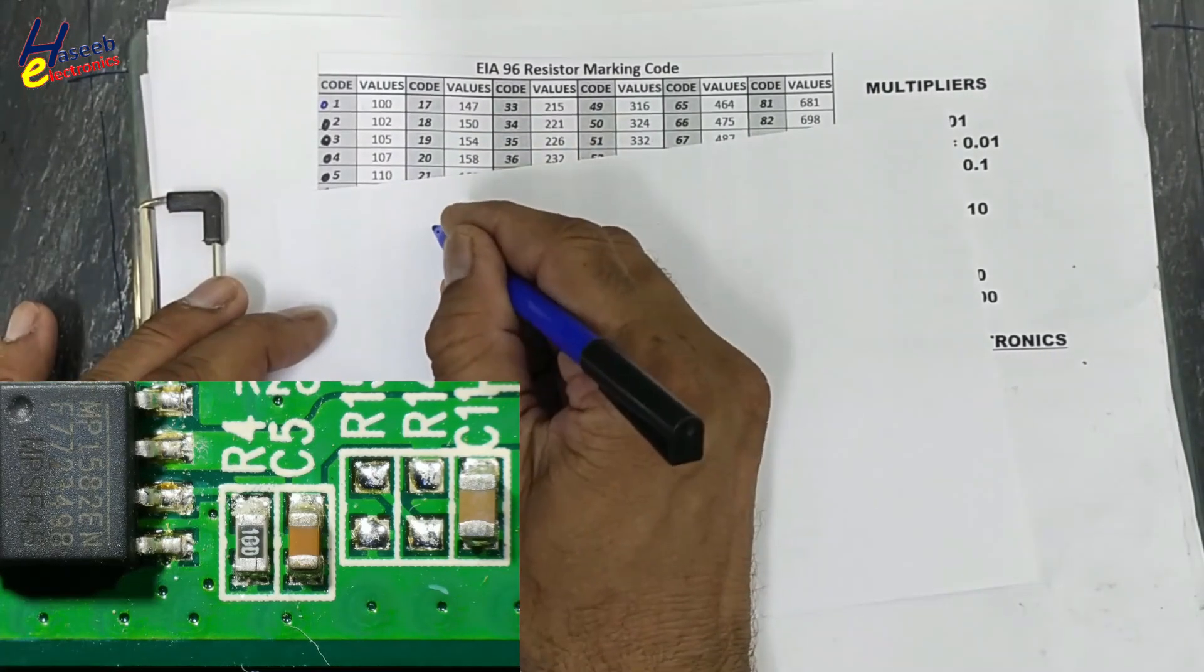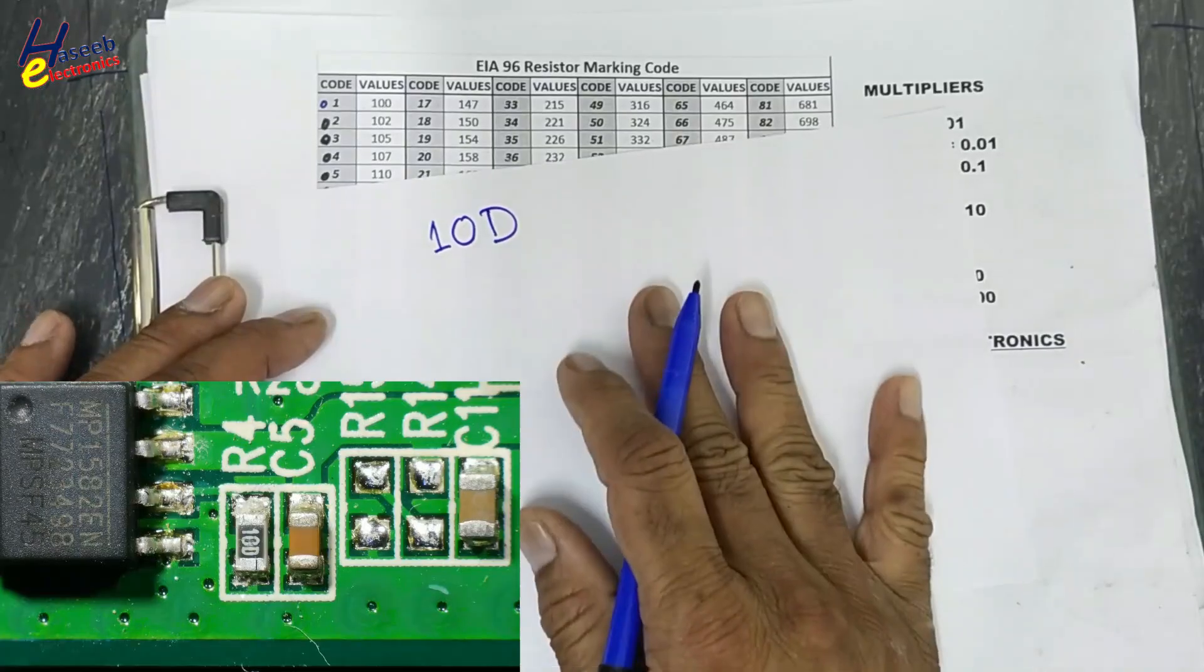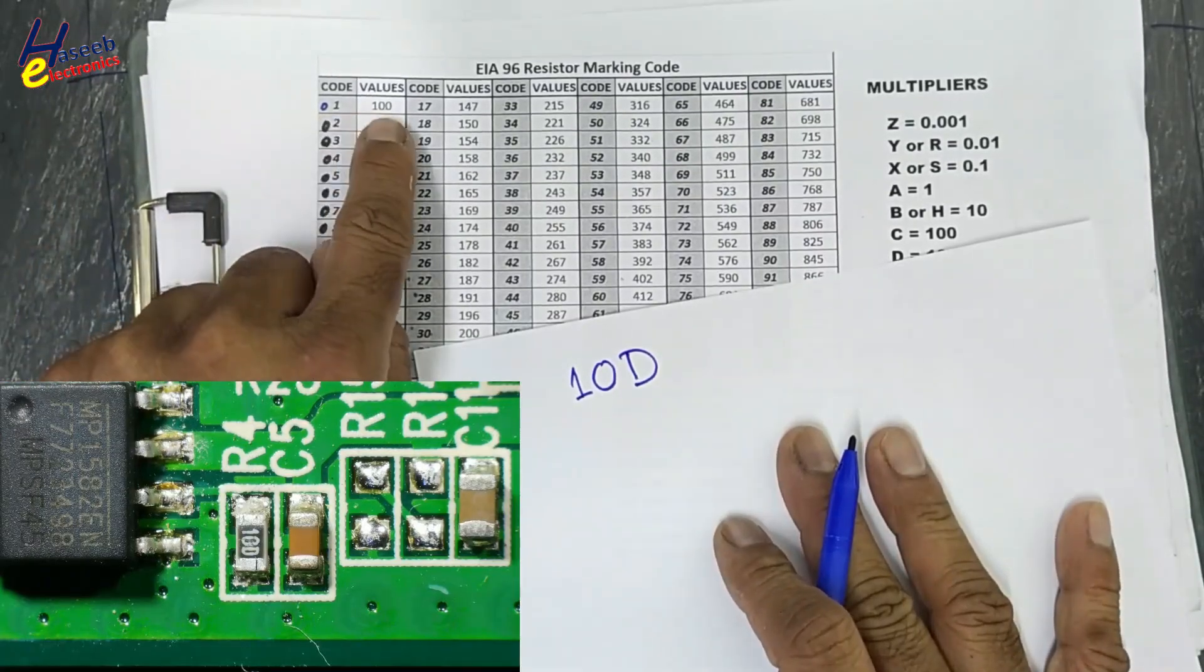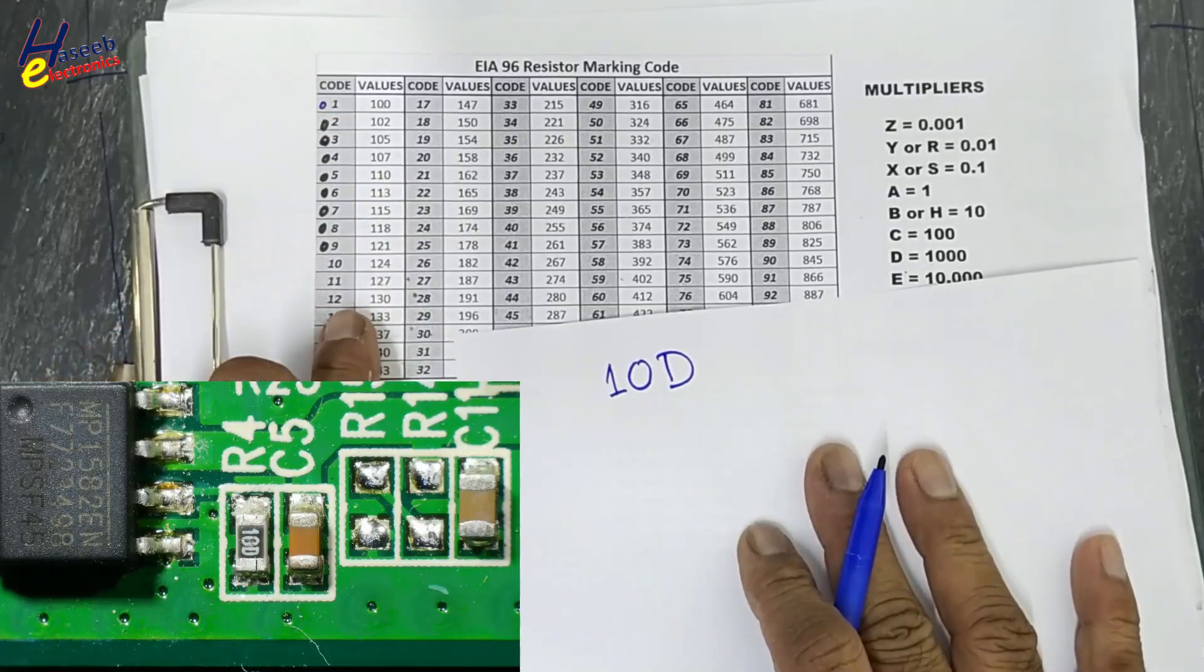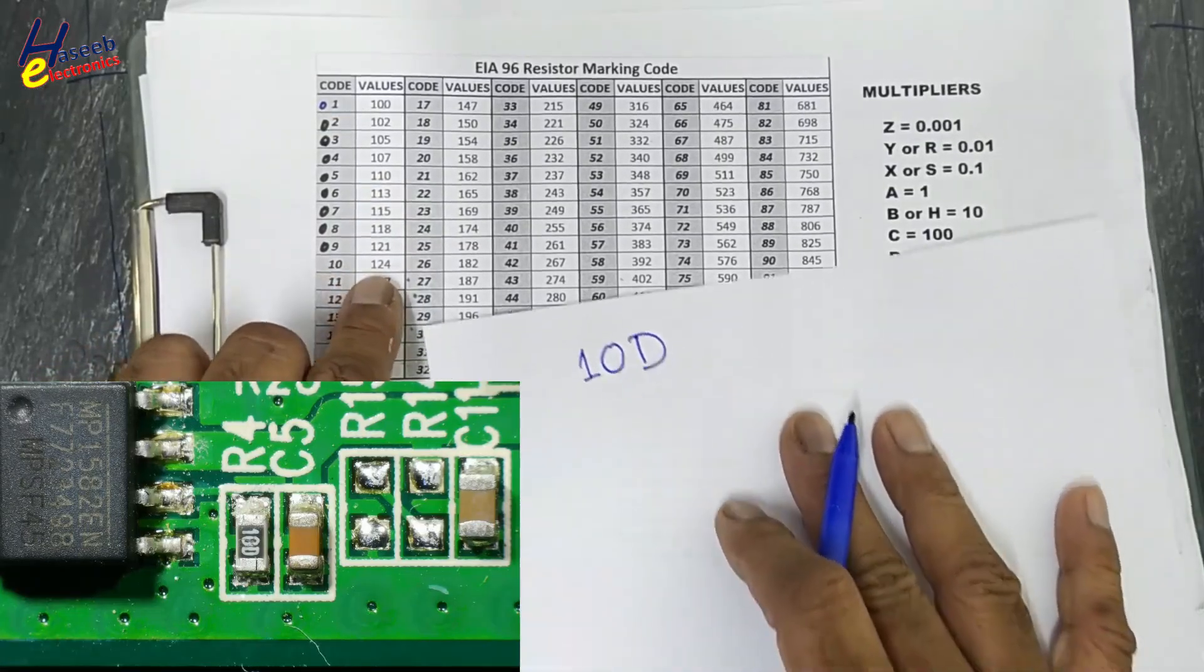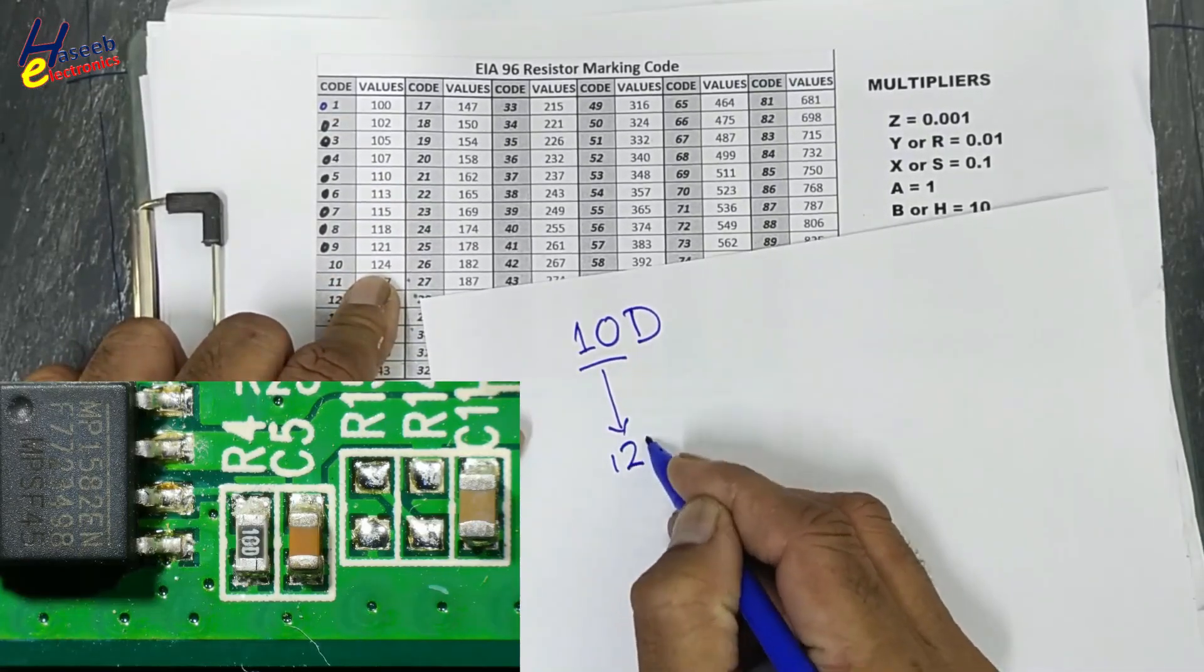Marking code 10D. In my last video I checked base value for 01. That was my mistake. We need to check 10. That is 124.